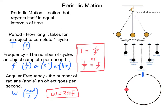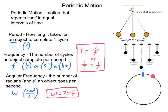How many times around the circle does it go within one second? As you can see here, this takes a little bit longer than a second. I'd say the frequency is probably going to be somewhere around 0.4 hertz. The number of times it only makes it 0.4 around the circle in one second — it doesn't make it all the way around.